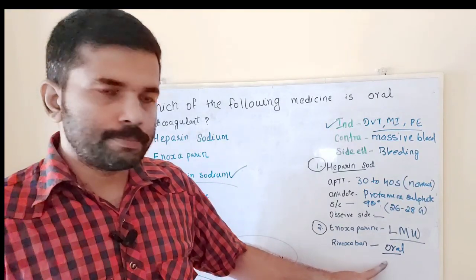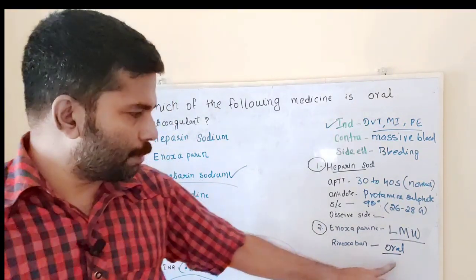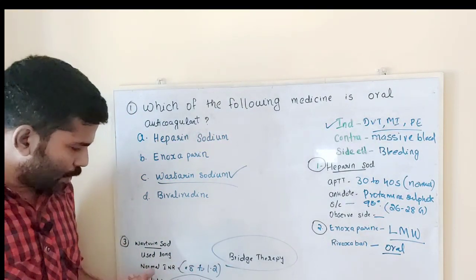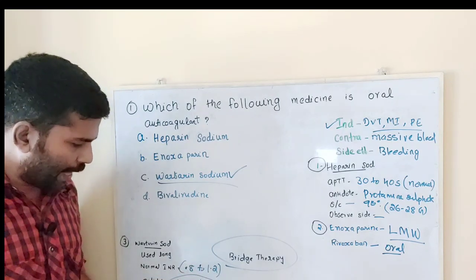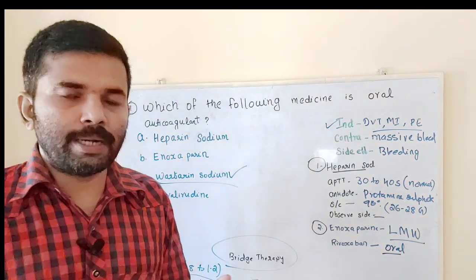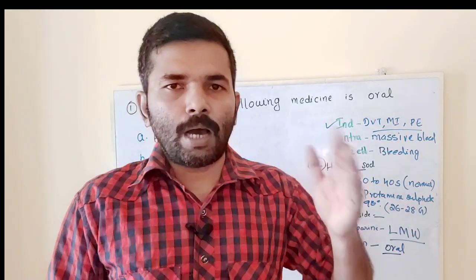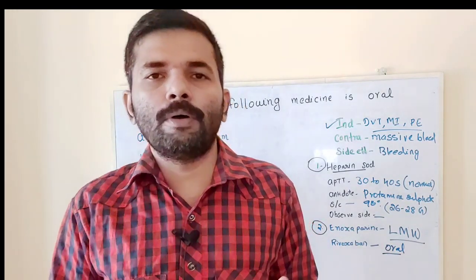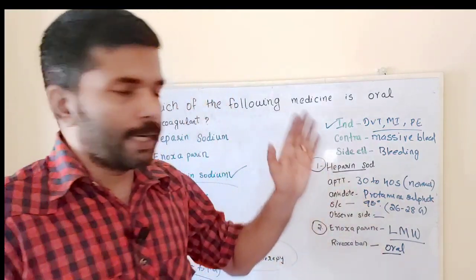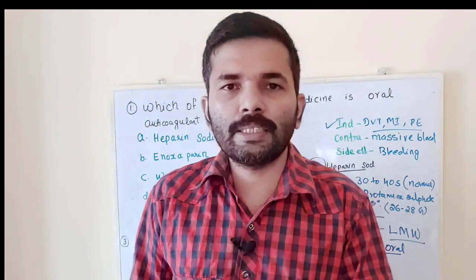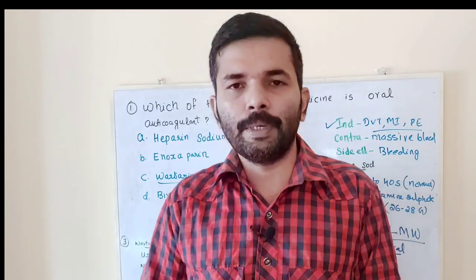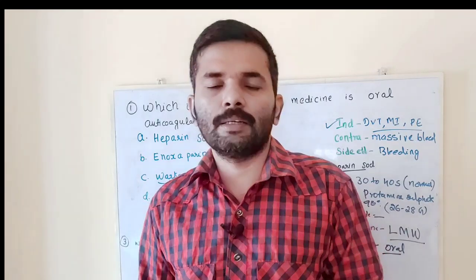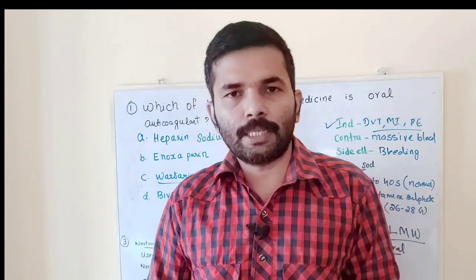Rivaroxaban is an oral anticoagulant tablet. Bridge therapy of warfarin sodium is used in long-term conditions. Normal INR is 0.8 to 1.2. The antidote of warfarin sodium is phytonadione (Vitamin K). Many classes are being uploaded — you can contact us for special classes. Thank you, all the best, please share this video.